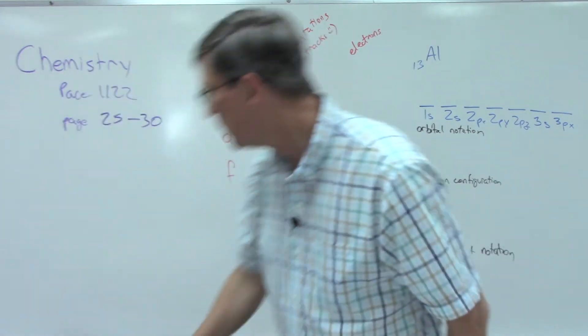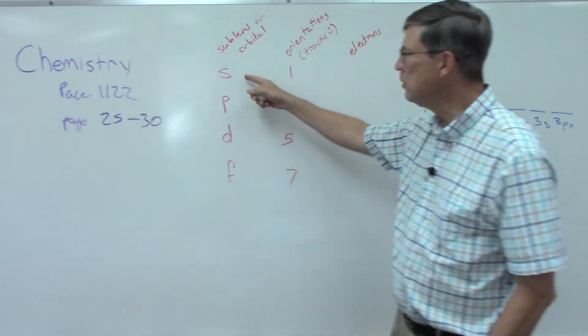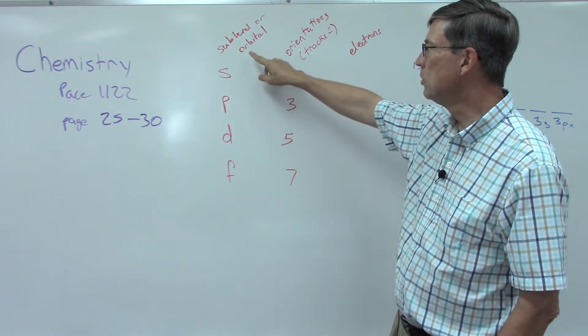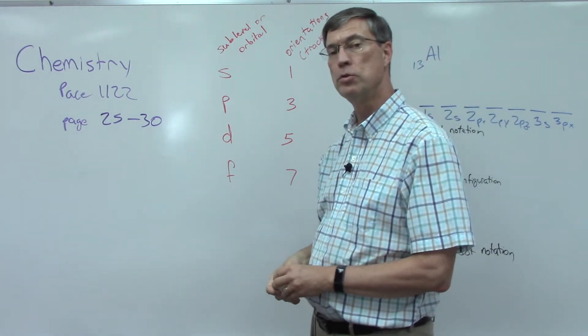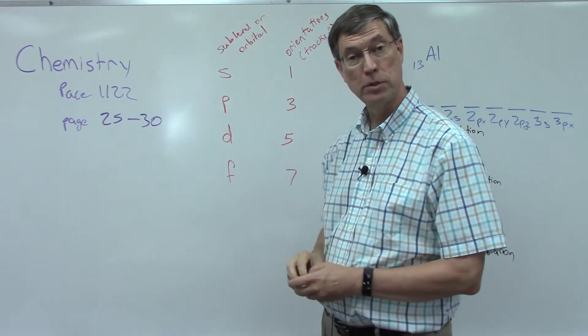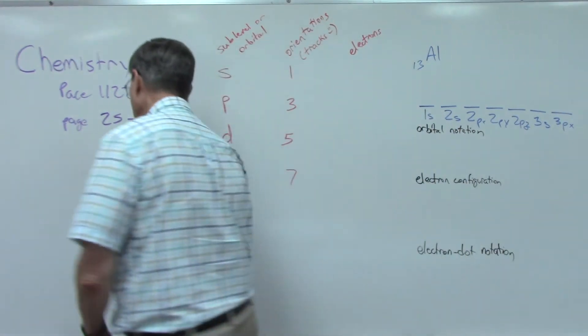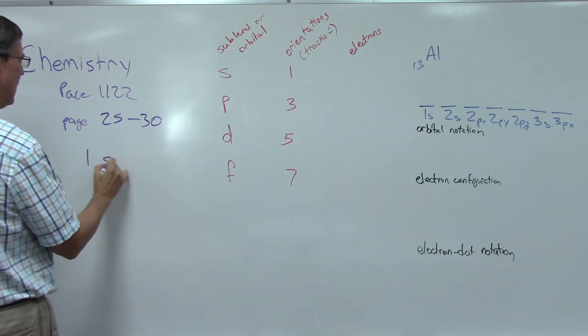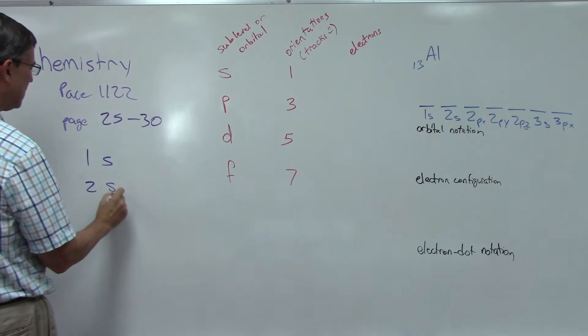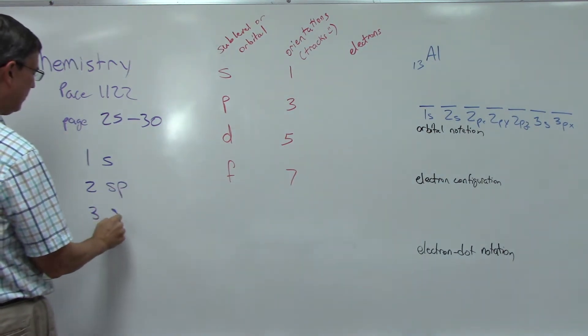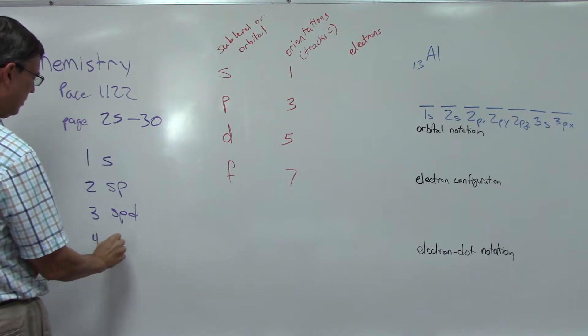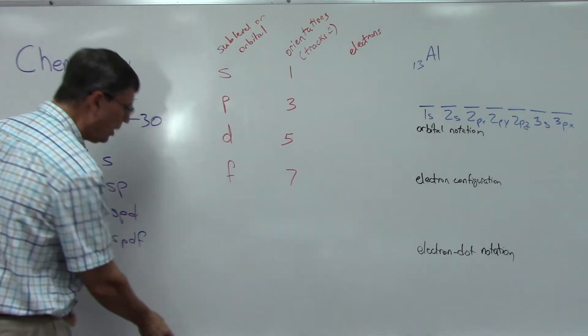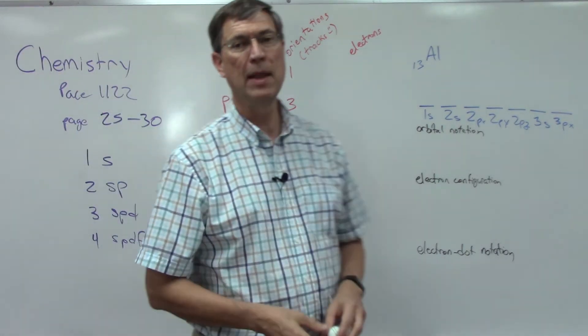You have your periodic table handy and your pace. Alright, let's talk about here on page 24. Maybe you remember this from physical science. We did a video about the SPDF. These are called sub-levels or they're also called orbitals. Energy level one only has s. Energy level two has s and p. Energy level three has SPD. Energy level four has SPDF.